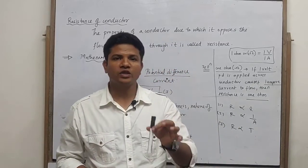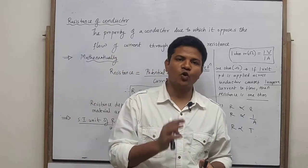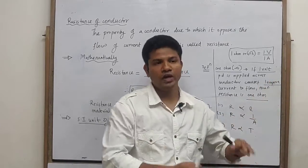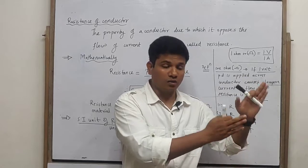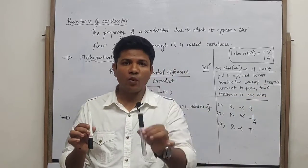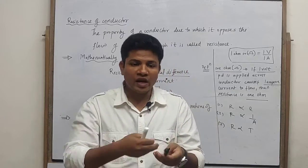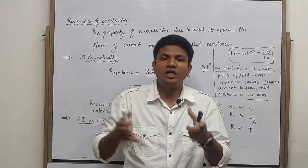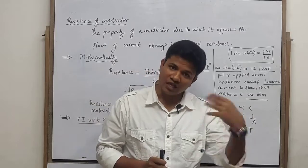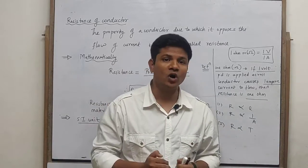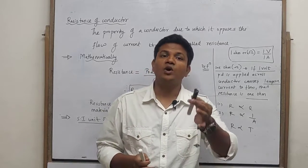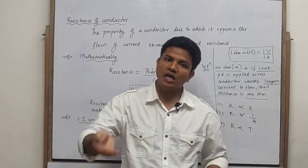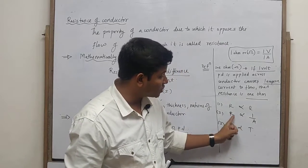For area of cross-section: if we take one thin wire and one thick wire, in a thin wire electrons have less space to flow, so collisions are more and resistance is more. In a thicker wire electrons have more space, so collisions are less and resistance is less. Therefore, thinner the wire, more is the resistance; thicker the wire, less is the resistance. So resistance and area of cross-section are inversely proportional.